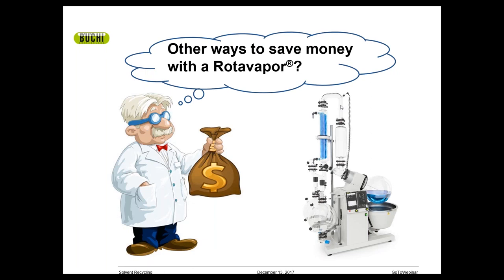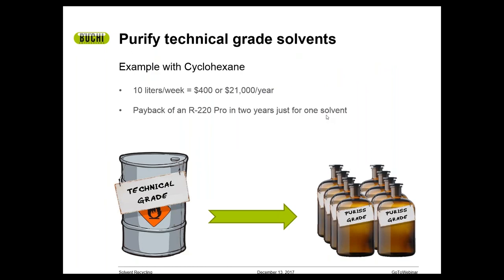Another way to save money: even if you're not going to recycle your own process solvents, you can buy lower-grade solvent. For example, if you buy technical-grade cyclohexane, which is usually about 80% pure, you can use the rotary evaporator to purify it to 90% or higher and save money that way — because you're paying less to purchase the chemicals than you would have if you bought them at higher purity.